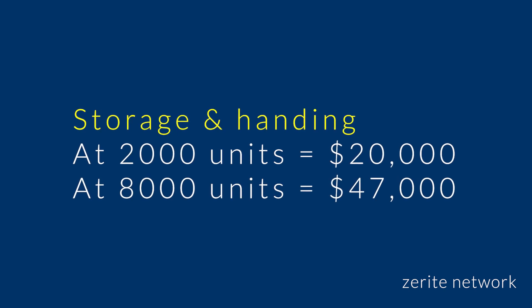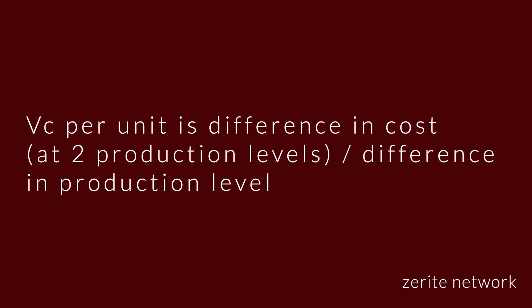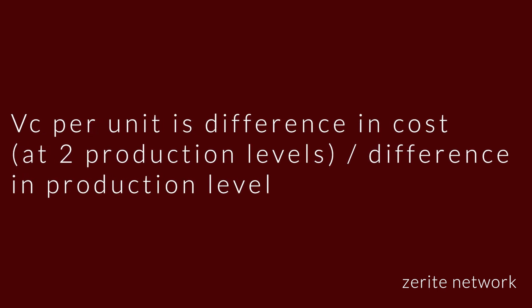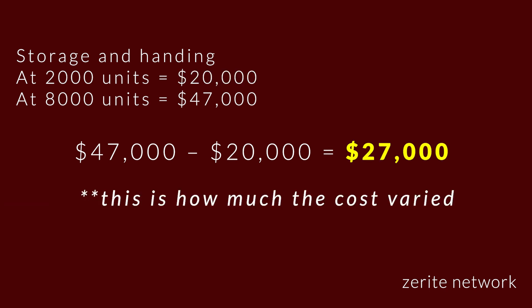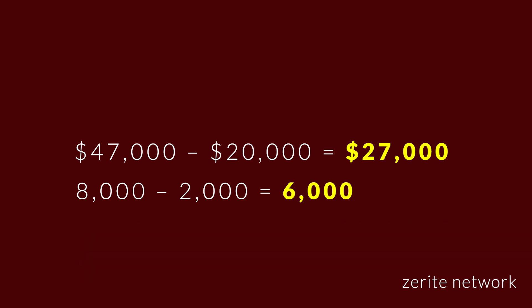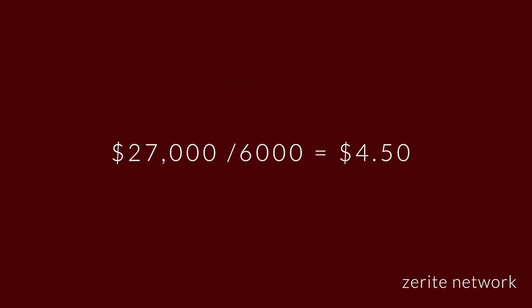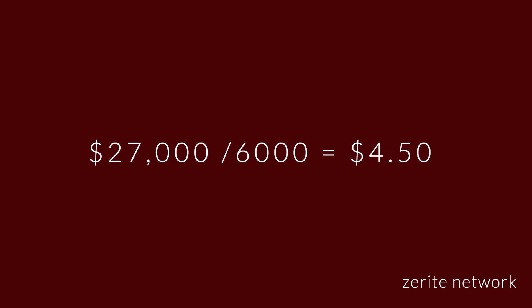Now that you understand the basics, let's look at the question. The first step is to calculate the variable cost for the storage and handling. This way, we will know how much an increase in production level will cost you. Variable cost per unit is the difference in cost at two production levels: $47,000 minus $20,000 gives you $27,000. In terms of units, it's 8,000 minus 2,000, which is 6,000 units. So the variable cost per unit is $27,000 divided by 6,000, which means the variable cost for each unit is $4.50.